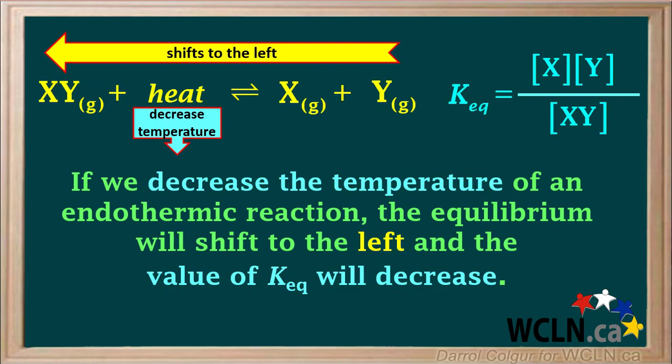We can reason that if we decrease the temperature of an endothermic reaction, the equilibrium will shift to the left, toward the heat term, and the ratio of products to reactants and the value of KEQ will decrease.